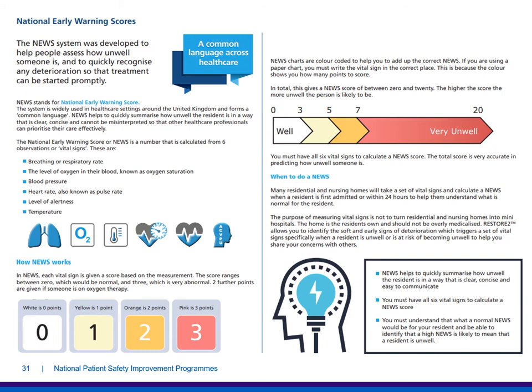To summarise: NEWS helps you to quickly summarise how unwell the resident is in a way that is clear, concise and easy to communicate. You must have all six vital signs to calculate a NEWS score, and you must understand what a normal NEWS would be for your resident and be able to identify that a high NEWS is likely to mean that a resident is unwell.